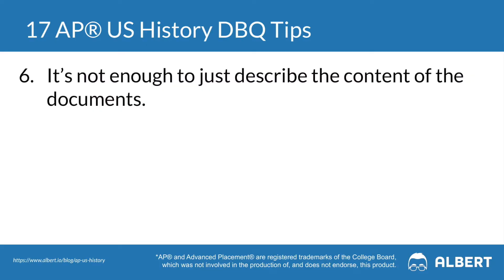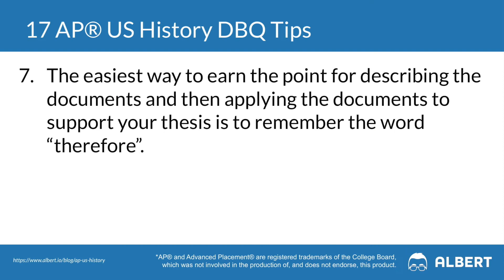Tip six is that it's not enough simply to describe what is going on in the document — that's only part of the points for the evidence section. You have to actually connect what you're describing back to your thesis to advance your argument. The easiest way to earn this point is to remember the word 'therefore.' You might say 'X, Y, Z, therefore A, B, C,' where XYZ is the description of the document and ABC is the implication showing how it relates back to your thesis.